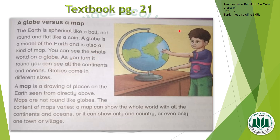A globe is a model of Earth and also a kind of map. When the Earth is marked with different places, countries, continents, and oceans, that becomes the map. You can see the whole world on a globe — as you rotate it, you can see all the continents and oceans. Globes come in different sizes as per the requirement of the person purchasing the globe.